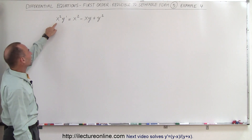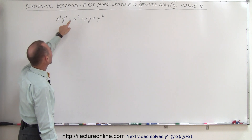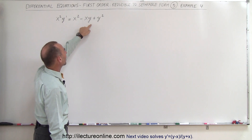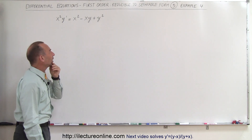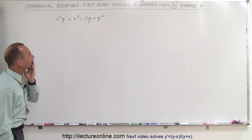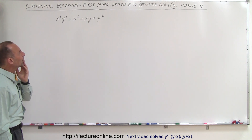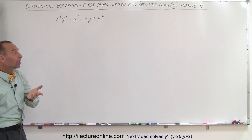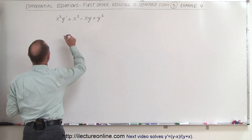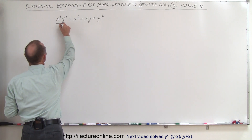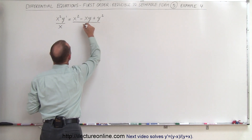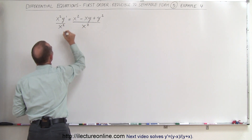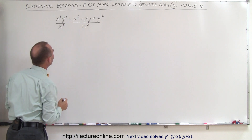We have an x-squared here, we have an x-squared, we have an x times y and a y-squared. So what if we divide both sides of the equation by x-squared? Let's try that. So we divide the left side by x-squared, we divide the right side by x-squared, and we go and see what happens.